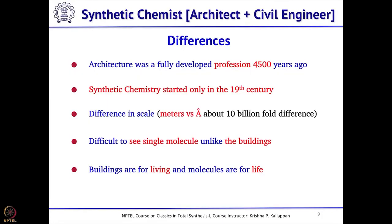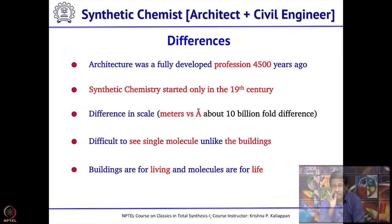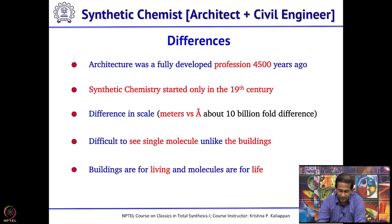What are the major differences? Architecture was a fully developed profession about 4,500 years ago, but synthetic chemistry or organic synthesis started only in the 19th century - the first synthesis was reported by Wöhler on urea. The third major difference is the scale. When you talk about buildings, you talk in meters, whereas when you talk about molecules, the scale is Angstroms. The difference is about 10 billion fold - meters versus Angstroms, 10 billion fold.